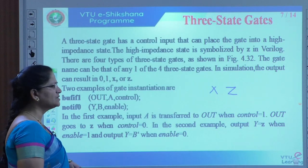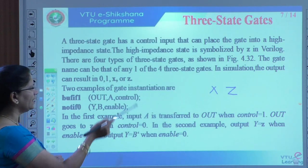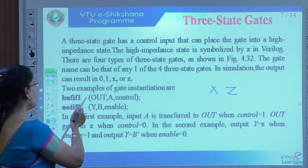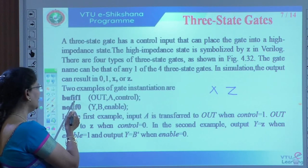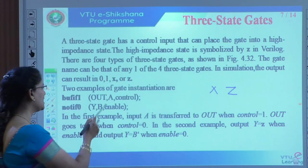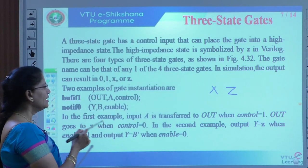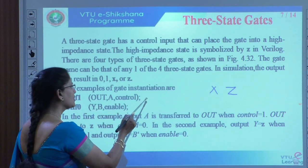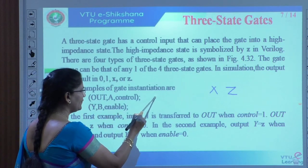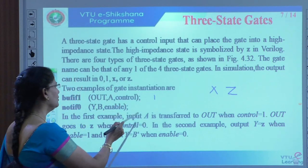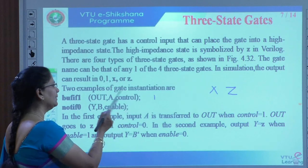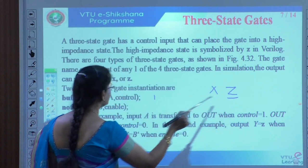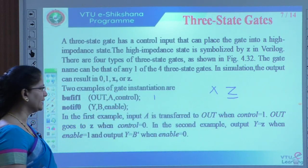Depending on that, we need to know how to use tri-state gates, using a buffer. We can define tri-state gates here. I have taken two examples. For bufif1: whatever A is, it is transferred to output when the control value is 1. When control value is 0, the output is in high-impedance state Z.